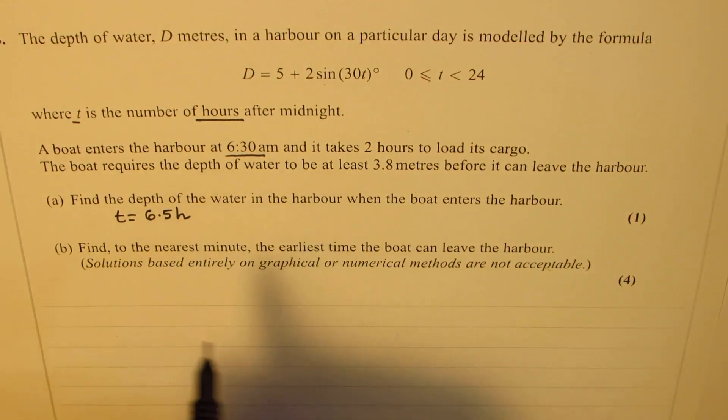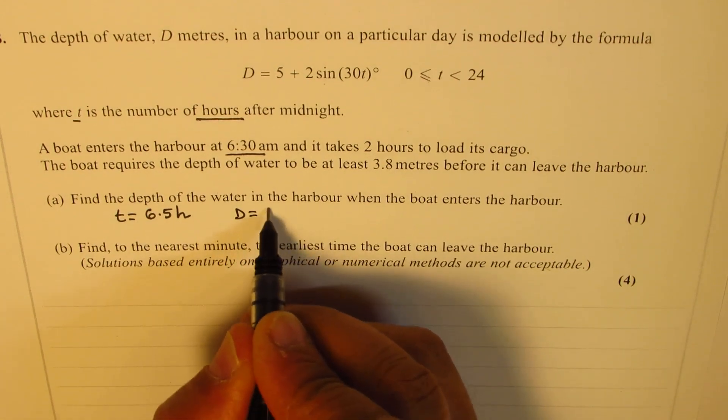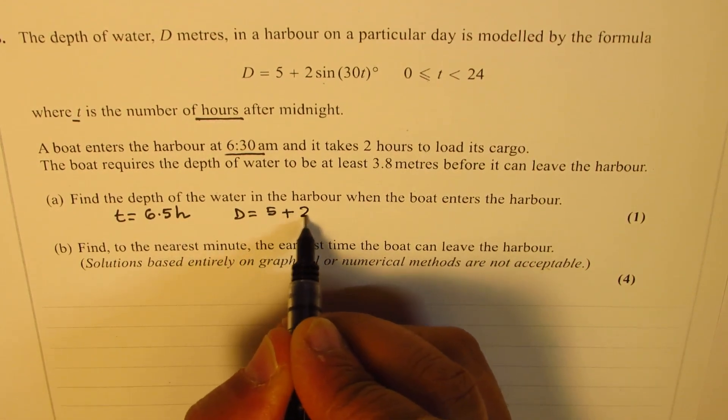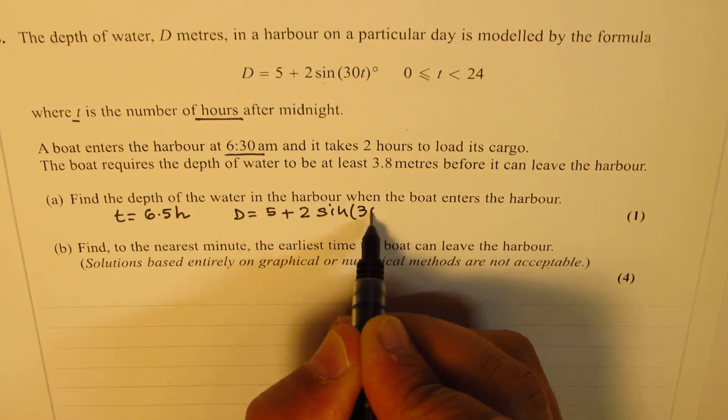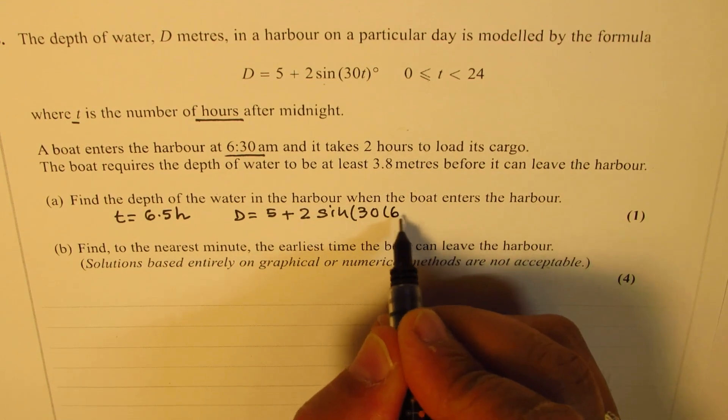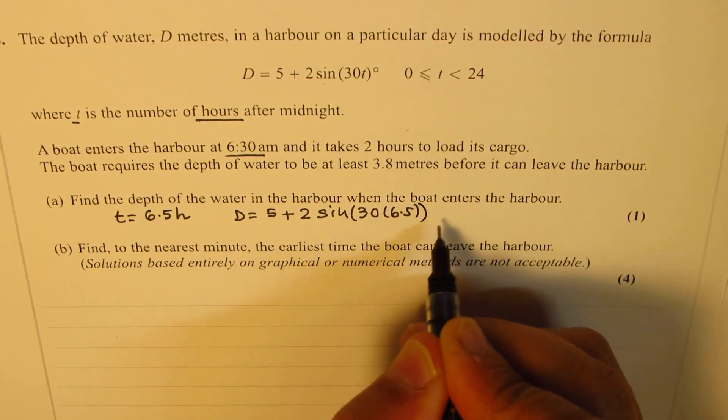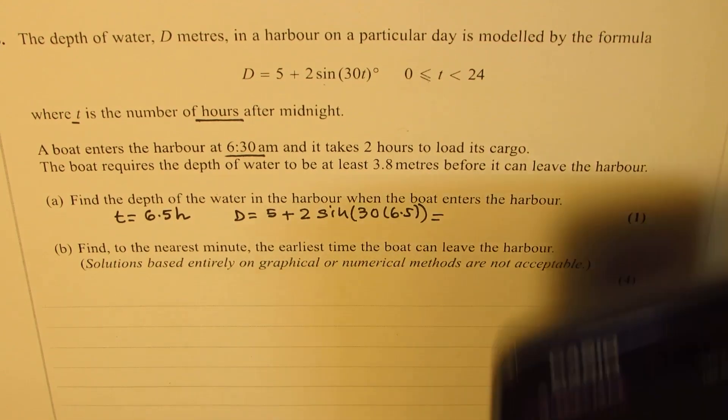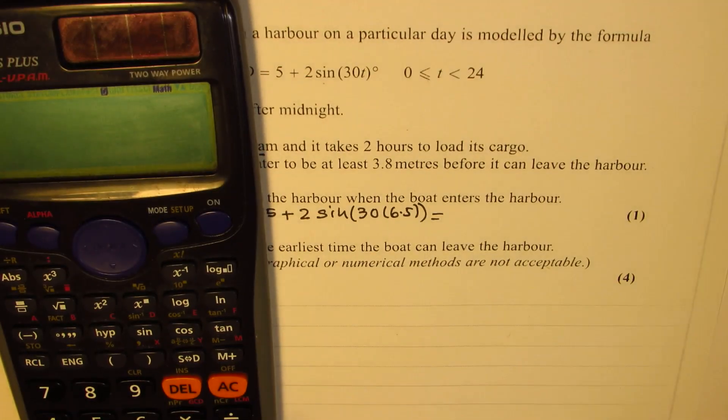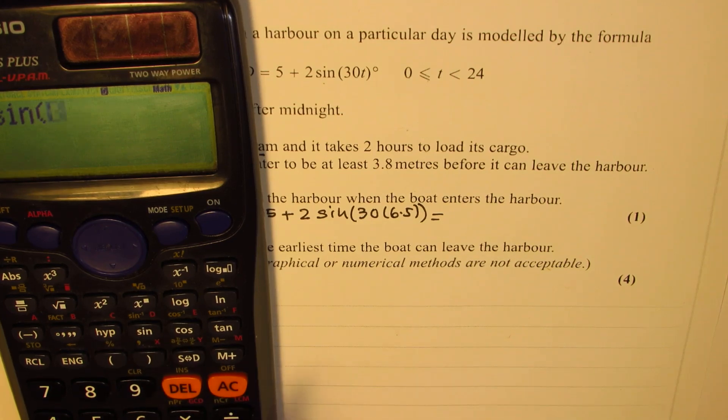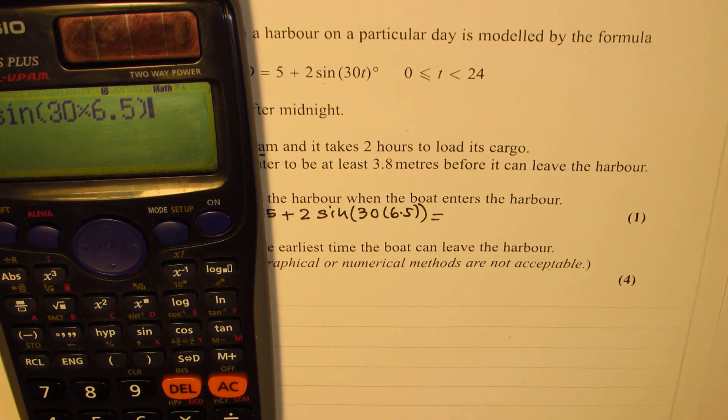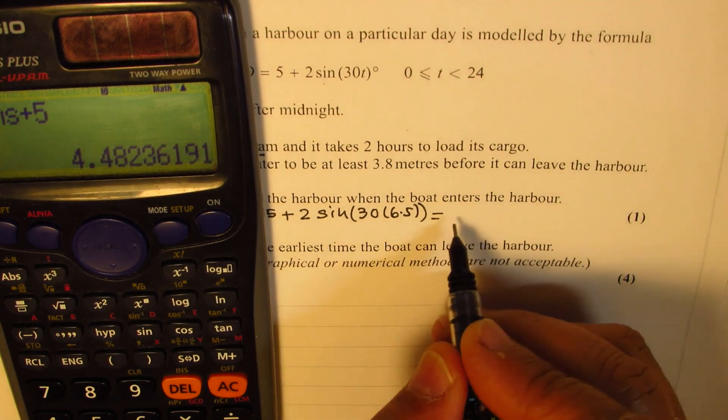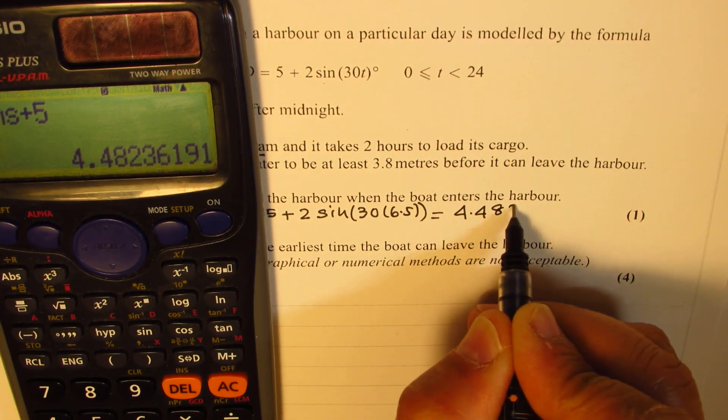So to get this depth we can say d equals 5 plus 2 times sine of 30 times 6.5. Let's use the calculator to find this answer. So we'll just do 2 times sine of 30 times 6.5, and then we are going to add 5. So then we get this answer as 4.482.